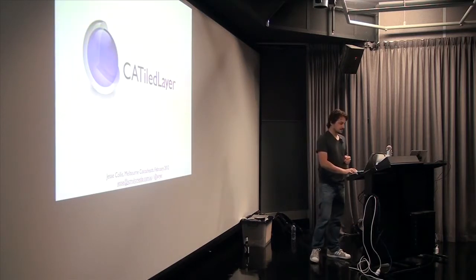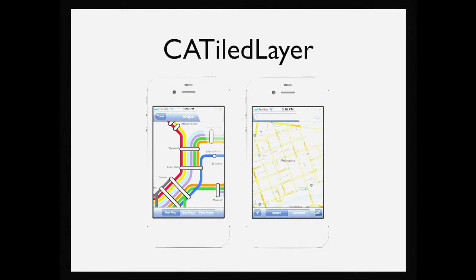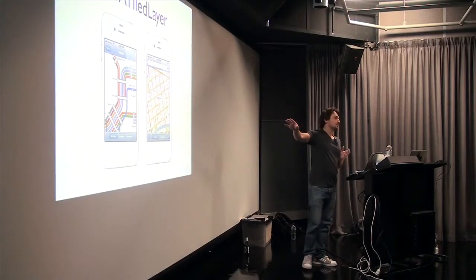Well, my background is building transport apps. That's how I started in iOS. CATiledLayer has always been there. Your Maps app, and that's TripView from Sydney, which is probably one of the better transport apps for Australia. They're both using CATiledLayer. So from the get-go, you've always been able to use CATiledLayer.